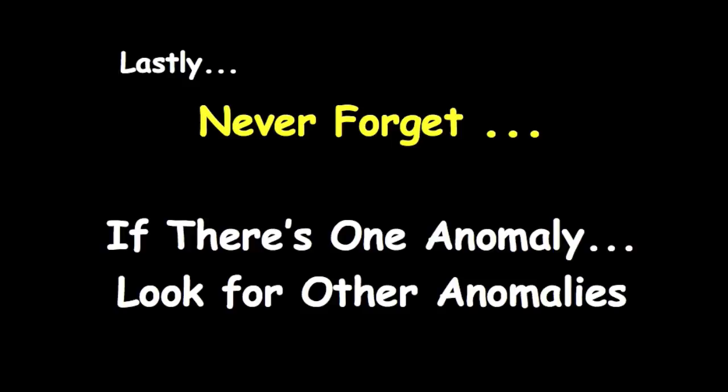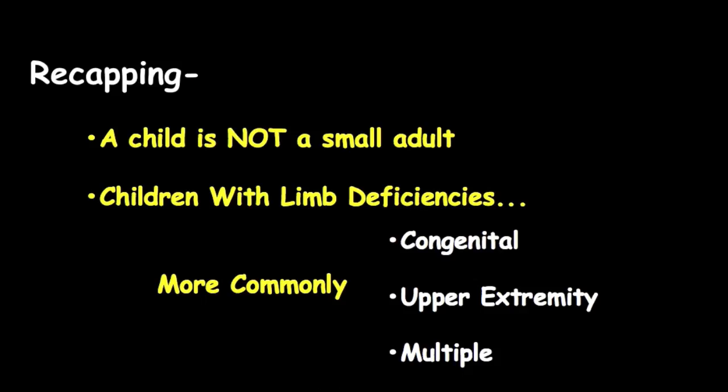Lastly, in terms of children with limb deficiencies, never forget that if there's one anomaly, look for other anomalies. So if there's a limb anomaly, keep in mind that there may also be kidney anomalies or heart anomalies — that cannot be overlooked.